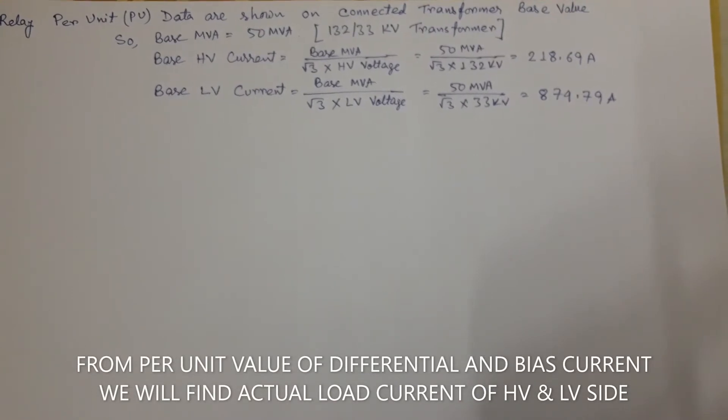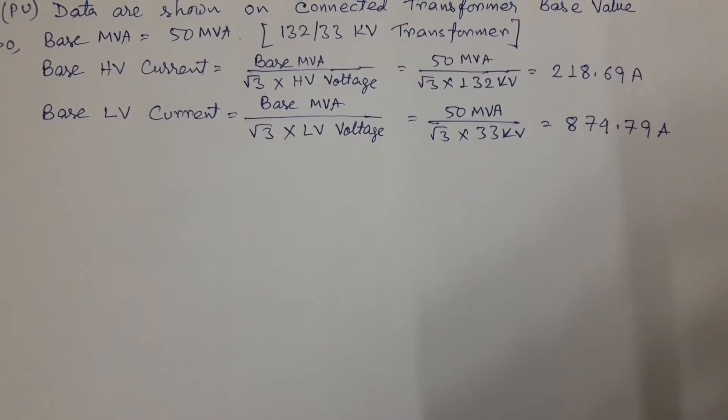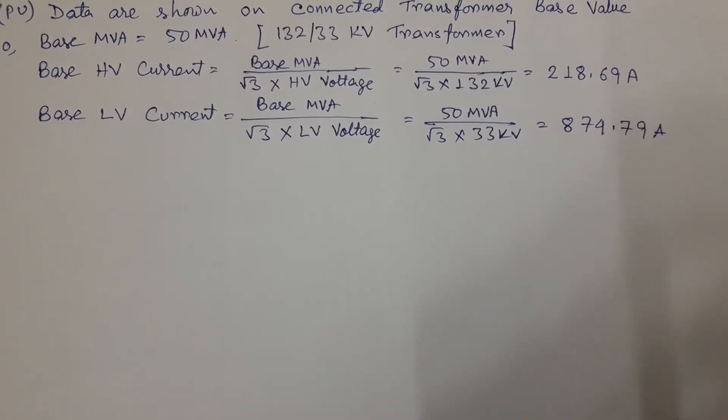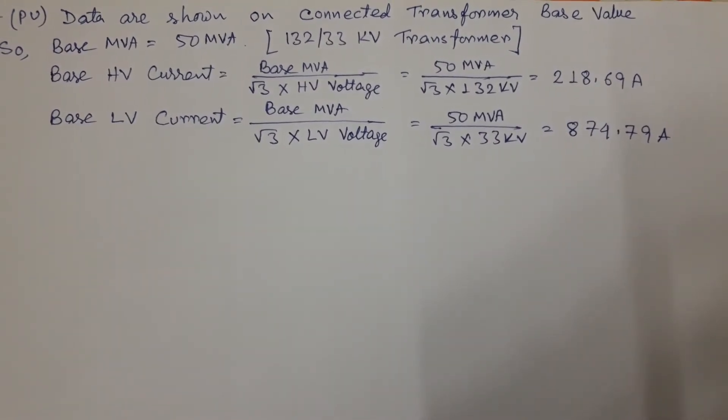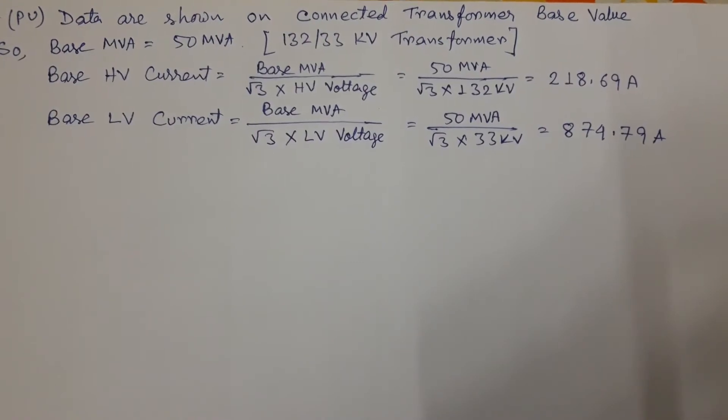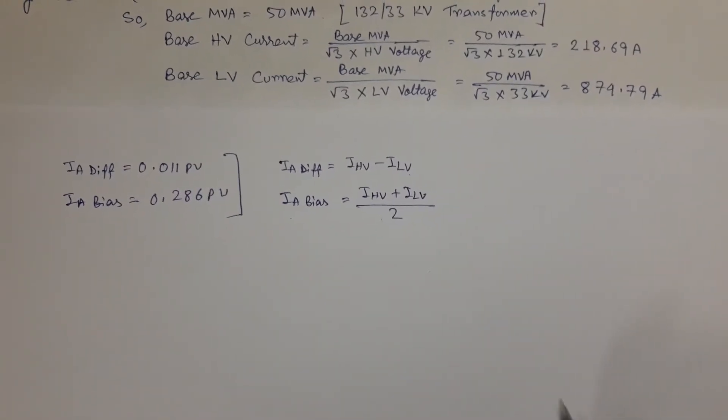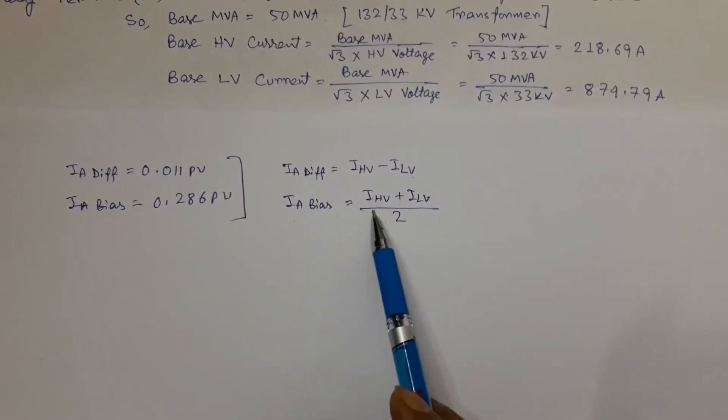Relay per unit data are shown on connected transformer base value. So HV side base current is 218 amperes, and LV side base current is 874.79 amperes. Now in relay, differential and bias currents are calculated separately for each phase by using these two formulas.